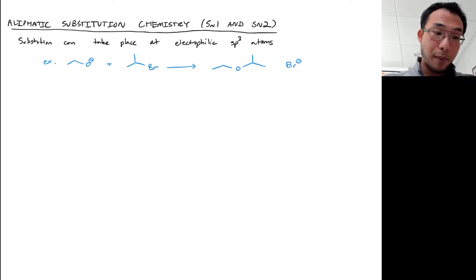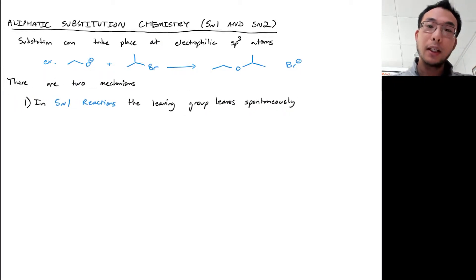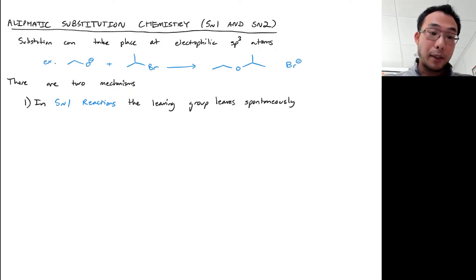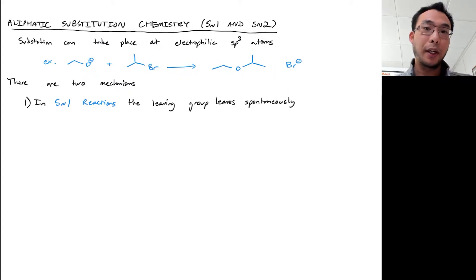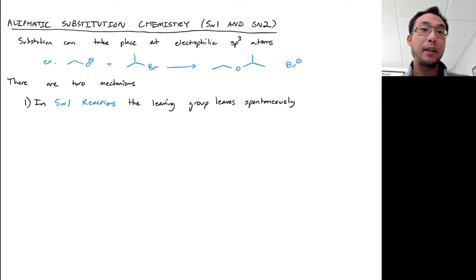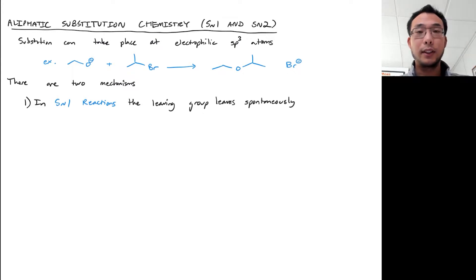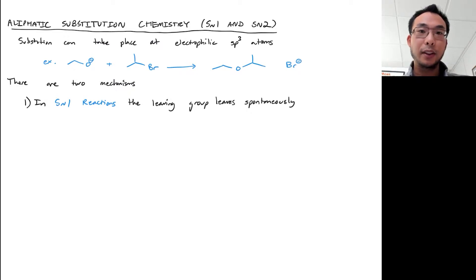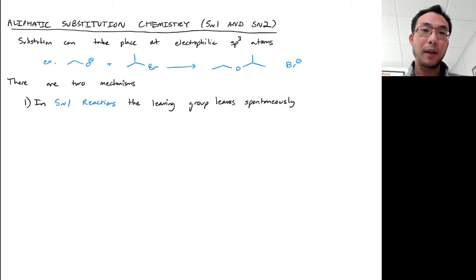There are two main mechanisms by which this reaction can take place. We'll go through these two mechanisms as if they're being used to explain the reaction shown, but to be clear, I'm not saying that one or the other mechanism is necessarily the correct one for this specific reaction. We're going to talk about these mechanisms generically before thinking about how to decide between them.